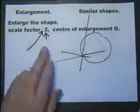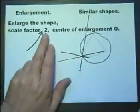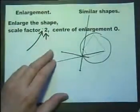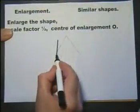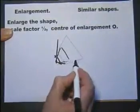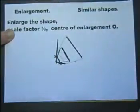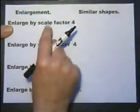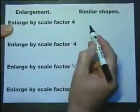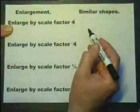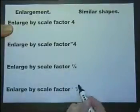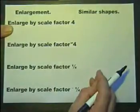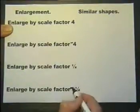So if you enlarge by a whole number, whether positive or negative, all the lengths will be that many times bigger — the negative just turns the shape upside down. If you enlarge by a fractional scale factor, for example a half, you measure each distance from the center and halve it, giving a shape where all the sides are half as long. To summarise: scale factor four means all sides are four times as long; negative four also gives four times the length but inverts the shape. Scale factor one quarter means all sides are a quarter of their original length; the negative just turns it upside down.